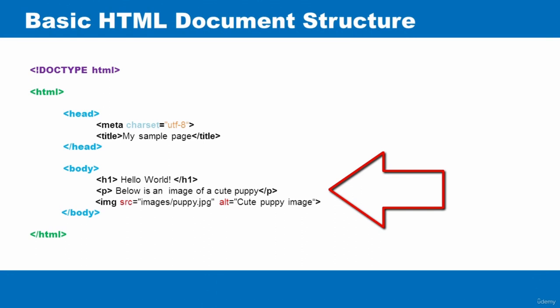Inside the body element, I have some nested elements. The H1 tag is used for headings — there are H1 to H6, with H1 being the largest. The P tag stands for paragraph, used to add paragraphs to a web page. Next, the IMG tag is used to add images. The IMG is a self-closing tag — it doesn't have a separate closing tag. Inside the IMG tag, you specify attributes.